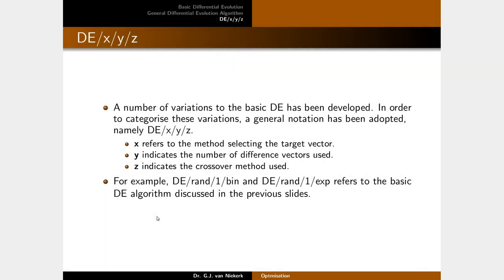A general notation has been adopted in the literature to categorize DE variations, written as DE/x/y/z, where x refers to the method of selecting the target vector, y indicates the number of difference vectors used, and z indicates the crossover method. For example, the basic DE described so far is DE/rand/1/bin — random target selection, one difference vector, binomial crossover — or DE/rand/1/exp using exponential crossover.